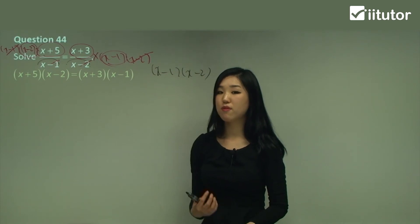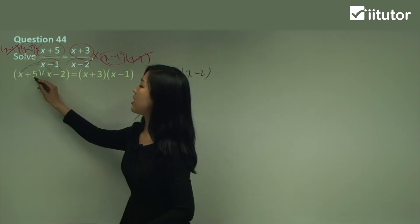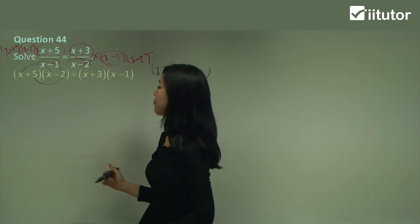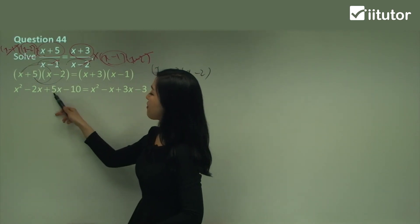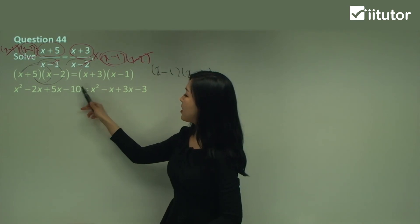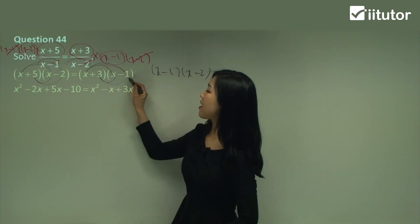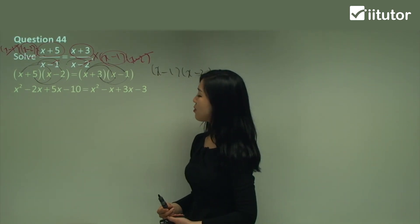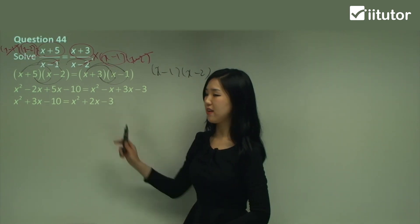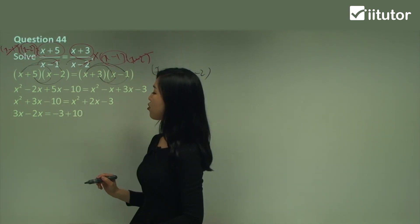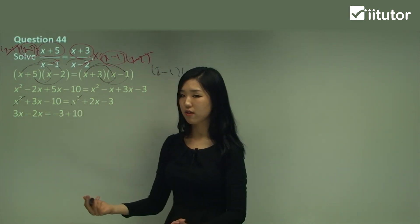Now let's expand — be very careful with your expansion. We have x times x is x squared, x times negative 2 is negative 2x, 5 times x is 5x, and 5 times negative 2 is negative 10. On the right: x times x is x squared, x times negative 1 is negative x, 3 times x is 3x, and 3 times negative 1 is negative 3. So simplify: negative 2x plus 5x is 3x, and negative x plus 3x is 2x. Put all x terms on the left and constants on the right. The x squared terms cancel out — x squared minus x squared is 0 — which is excellent.